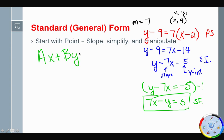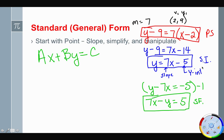Standard form is Ax + By = C, where no fractions are allowed for A, B, and C, and A must be positive. To summarize: start with point-slope form every time, simplify to get slope-intercept form, then manipulate to get standard form. It all depends on what the question asks, but always start with point-slope.